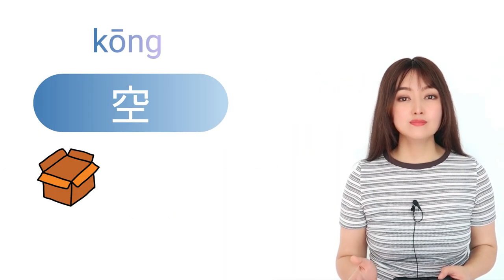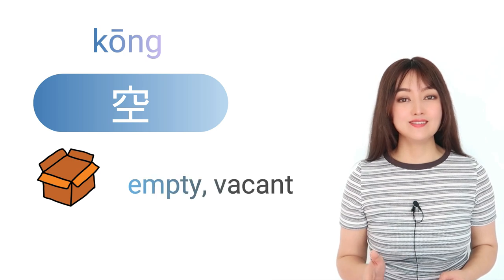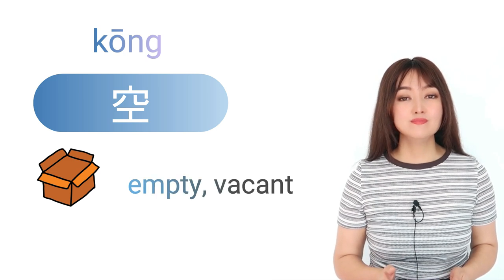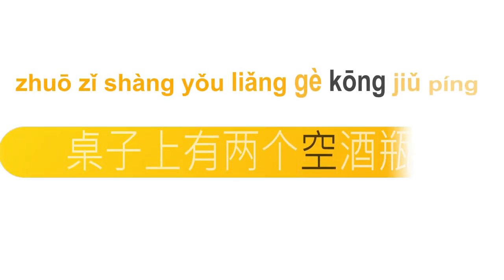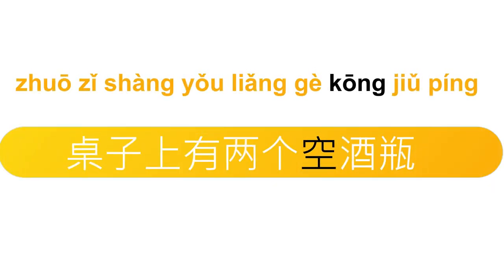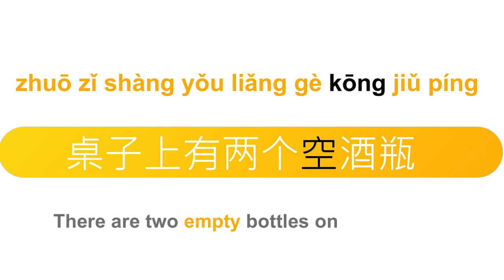下一个，空，empty, vacant。空，空。桌子上有两个空酒瓶。There are two empty bottles on the table. 桌子上有两个空酒瓶。